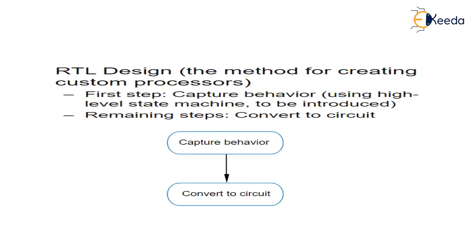High level state machines are different from normal finite state machines. A high level state machine will have multiple data inputs for processing your data and certain local registers. The high level state machine captures the behavior of my processor. That is the first step, and the remaining steps convert from the behavior into a circuit. The state diagram will have certain multiple data inputs and outputs — it is not single bit data. We will understand single bit versus multiple data when we see an example through a case study.